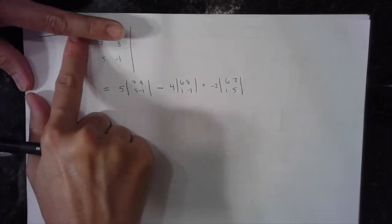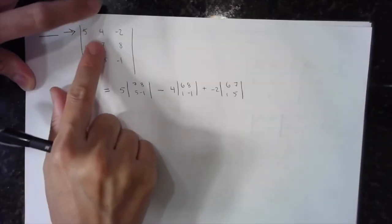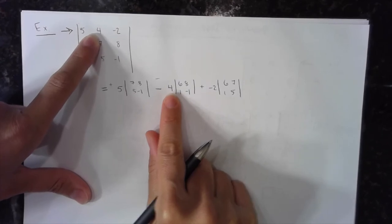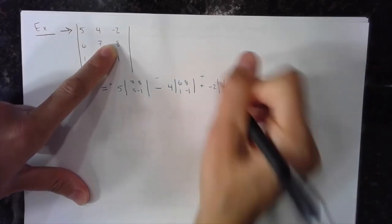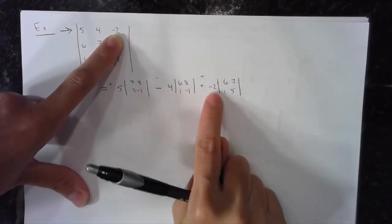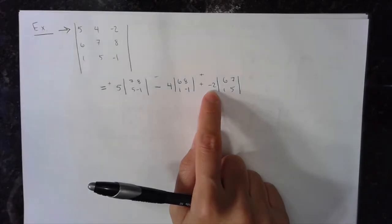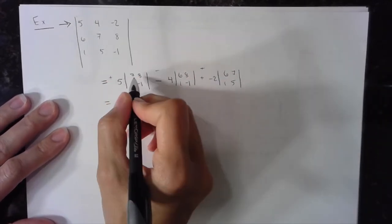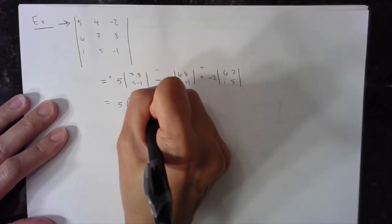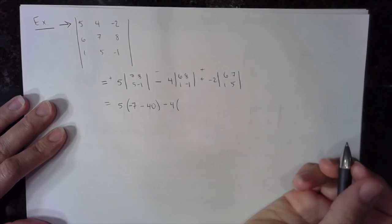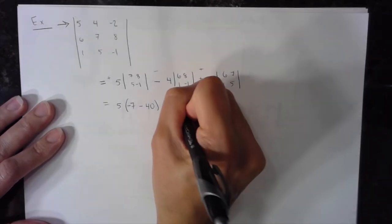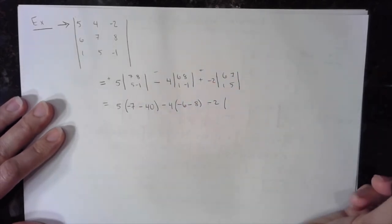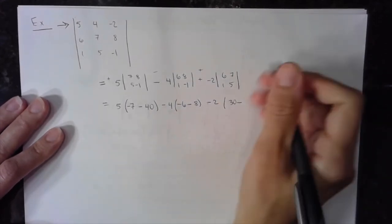So the pattern is always plus the first element, minus the second element, plus the third element. The second element here was positive 4, but I'm subtracting it. The third element was negative 2, so plus a negative gives me a negative there. Now simplify: 5 times (7 times negative 1 is negative 7, minus 8 times 5 which is 40), minus 4 times its corresponding determinant (6 times negative 1 is negative 6, minus 8 times 1 which is 8), plus negative 2 times its corresponding determinant (6 times 5 is 30, minus 7 times 1 which is 7).